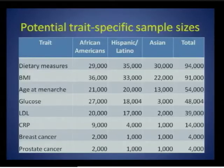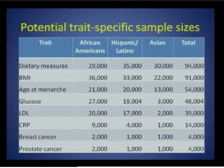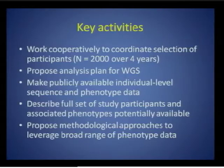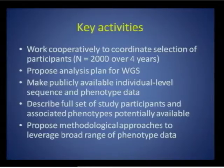Assuming funded grantees have access to samples at least as large, diverse, and well-phenotyped as existing ones, sample sizes of potentially sequenceable participants number well into the tens of thousands, approaching 100,000, fairly well distributed across multiple ethnic groups. A key activity of phase two will be to work cooperatively across sites to coordinate participant selection, prioritize those of highest value, make individual-level sequencing and phenotype data publicly available, describe the full set of study participants, and propose methodologic approaches to leverage the broad range of phenotype data.